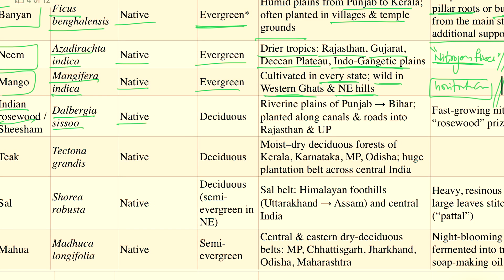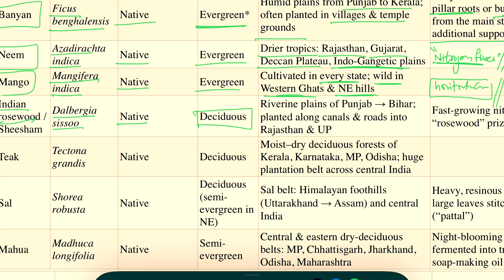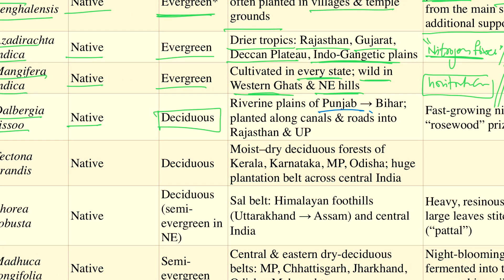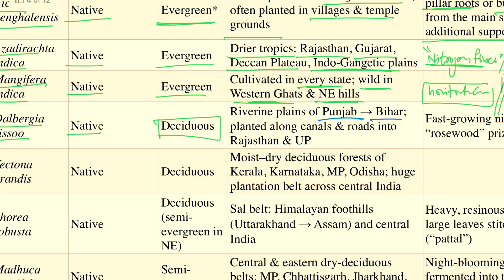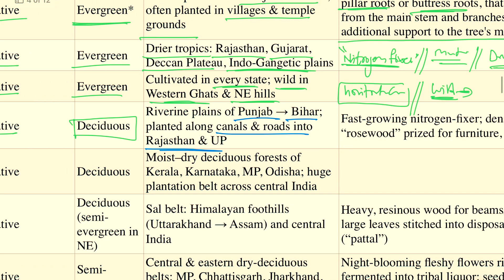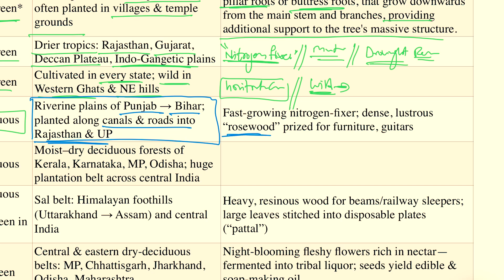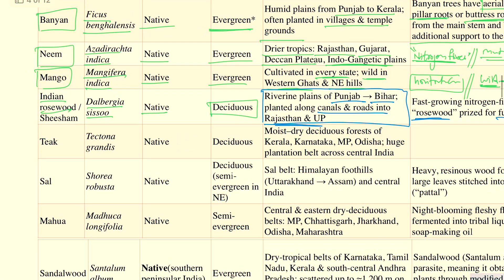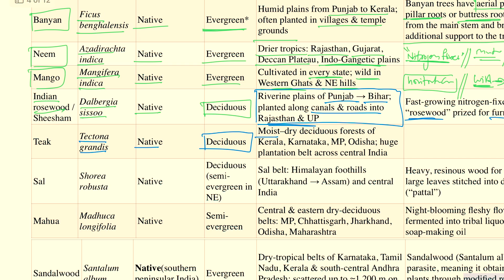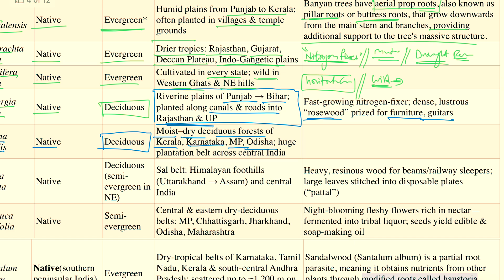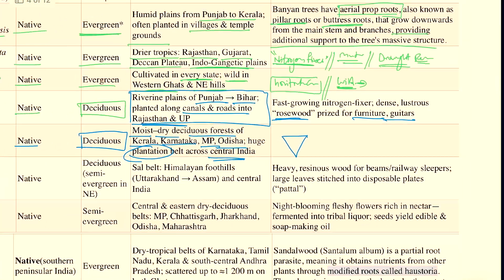Going to Dalbergia sissoo, or Indian Rosewood — it is a native deciduous species, found in the plains of Punjab to Bihar, and mostly planted across canals and roads in Rajasthan and UP. It is mostly confined to the northern plains of our country. The resin obtained from the tree is used for furniture and making violins. Then, Teak — Tectona grandis — is a native deciduous tree found in moist and dry deciduous forests of Kerala, Karnataka, Madhya Pradesh, and Odisha, mostly confined to the peninsular part of the country, and grown as plantations across central India for commercial purposes.